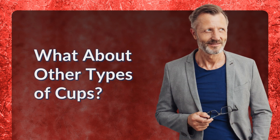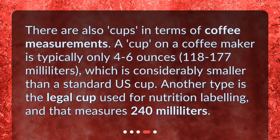What about other types of cups? There are also cups in terms of coffee measurements. A cup on a coffee maker is typically only 4 to 6 ounces — 118 to 177 milliliters — which is considerably smaller than a standard U.S. cup. Another type is the legal cup used for nutrition labeling, and that measures 240 milliliters.